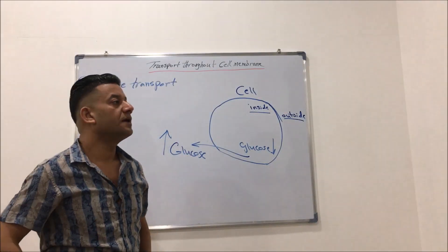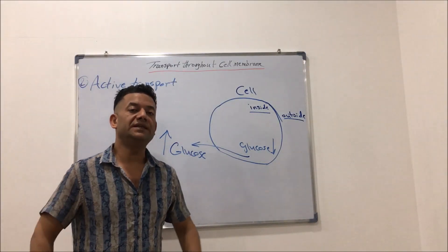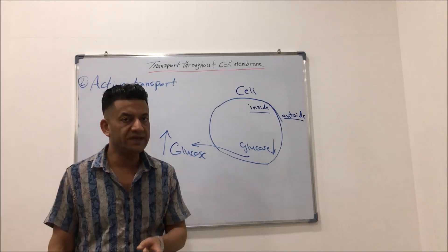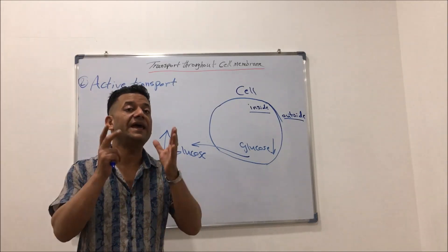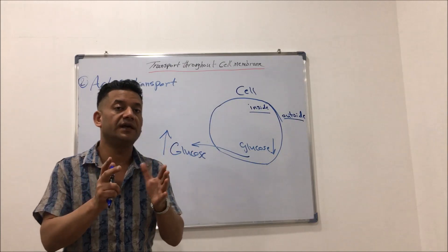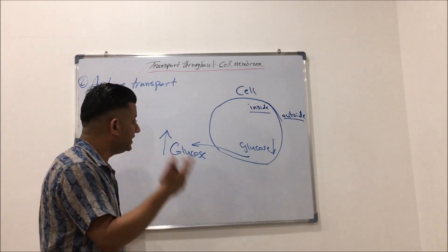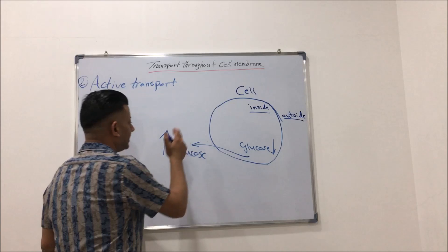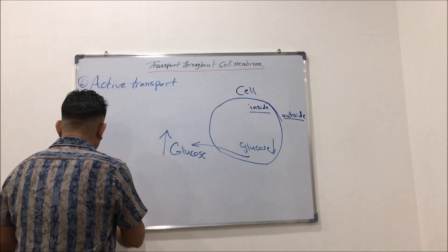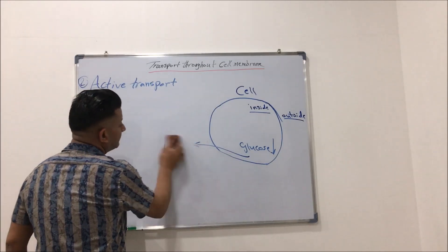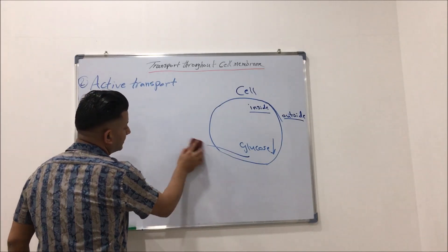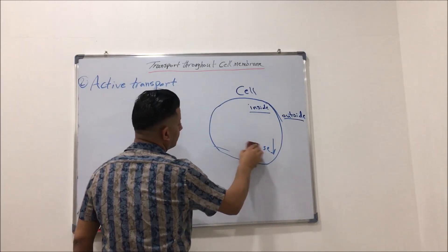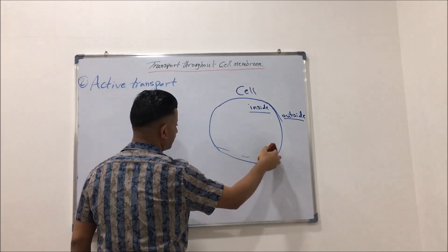Why is that? Because this will lead to consumption, or expenditure, of ATP energy directly from the cell. In terms of active transport, there are many types of active transport.